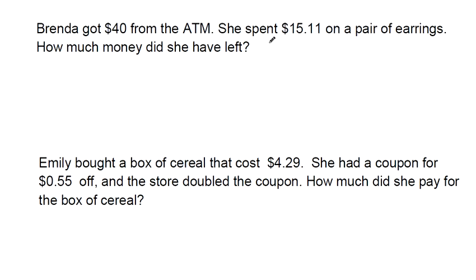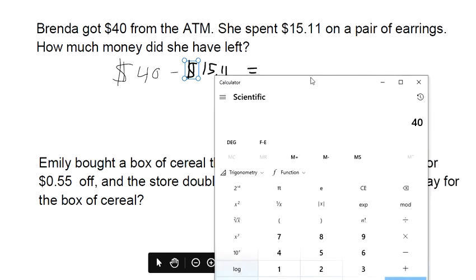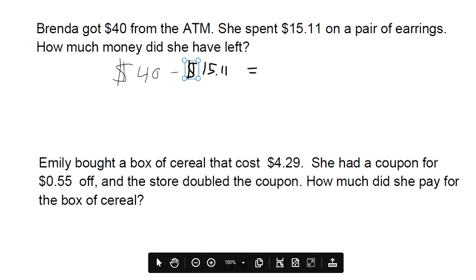So if you start with $40 and then you spend $15, you should have less money, right? So all you have to do for this one is take the $40 and subtract it by the $15.11. And the calculator is okay by me, so $40 subtracted by $15.11, $24.89.